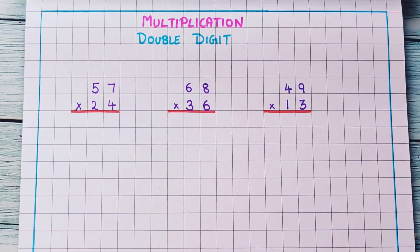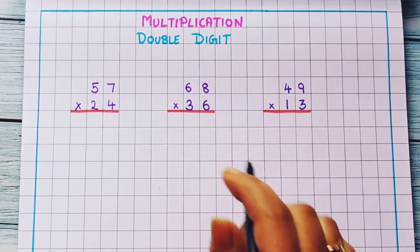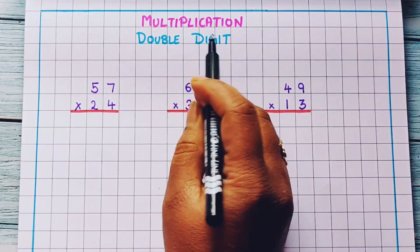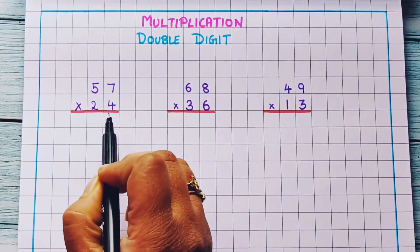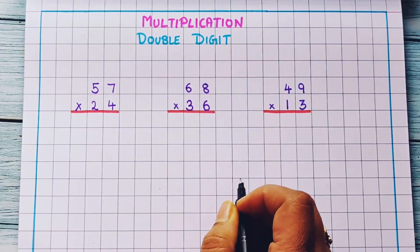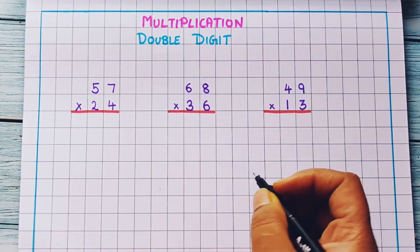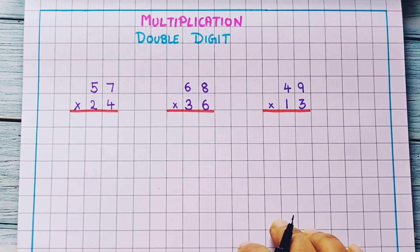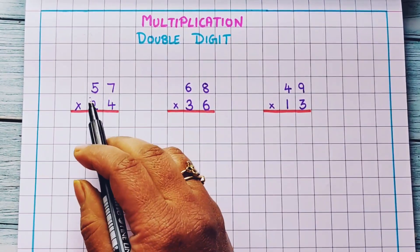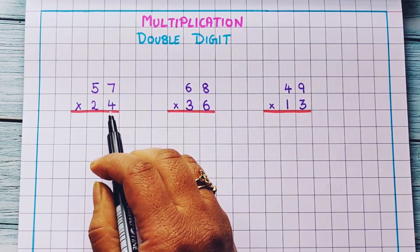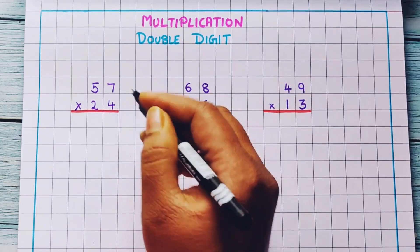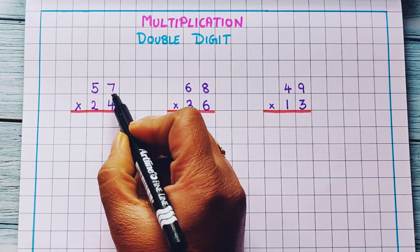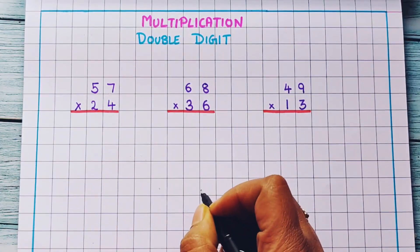Hi everyone, welcome back. Today we are going to learn double digit multiplication — 2 digit with 2 digit multiplication. In previous videos we have done 2 digit with 1 digit multiplication, and now in this video we are going to learn 2 digit with 2 digit multiplication.